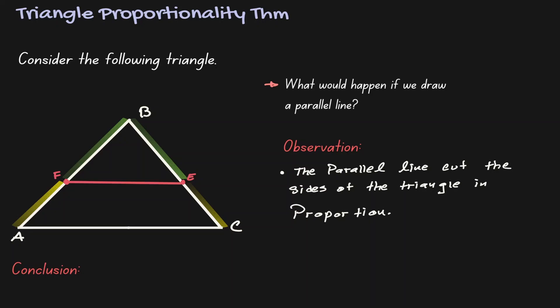In other words, if we get line segment AF and divide by the line segment FB, which notice are the two segments on the left hand side, that is going to be equivalent to the proportion EC divided by BE.